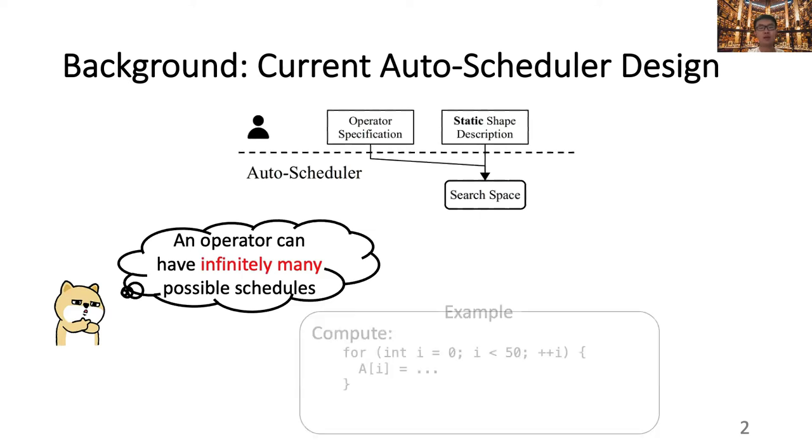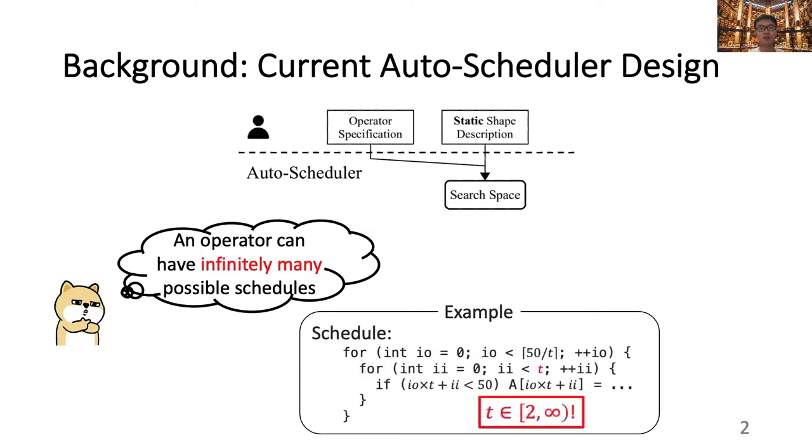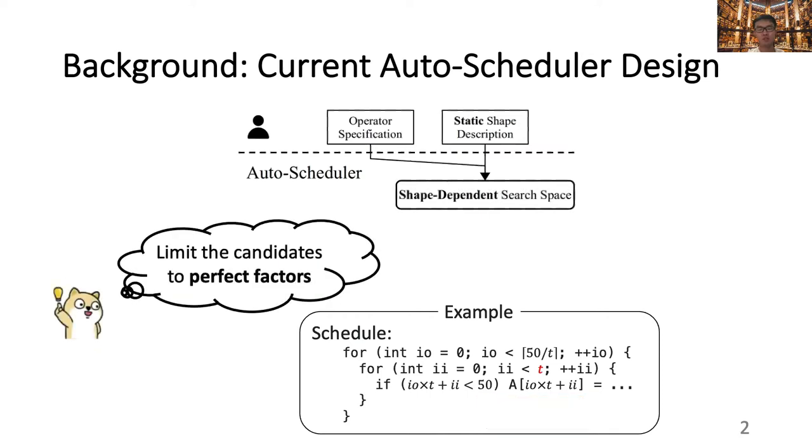As an example, consider the compute shown on the slide. Imagine that we are about to apply the loop tiling transformation to the loop structure. As you can notice, even with such a simple transformation, there can be infinitely many possible tiling candidates. To limit the search space, one solution commonly adopted is to circumscribe the tiling candidates to those that are perfect factors. Because the perfect factors are dependent on the loop extent, we hence named this approach shape-dependent search space construction. The additional benefit of this approach is that it can also avoid the necessity of introducing auto-boundary checks in the loop body.